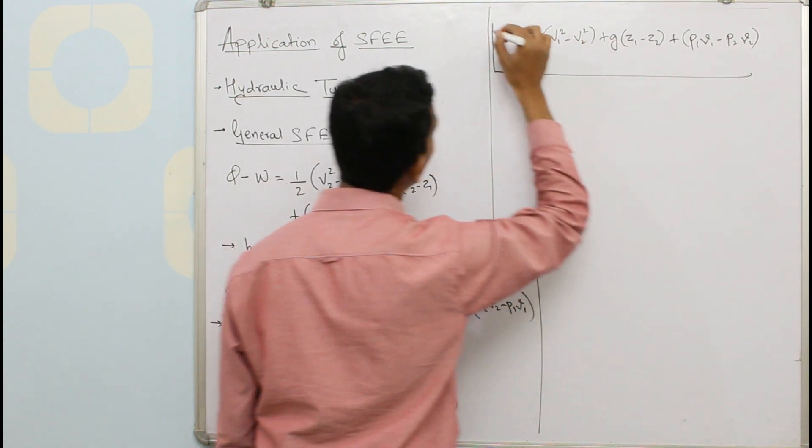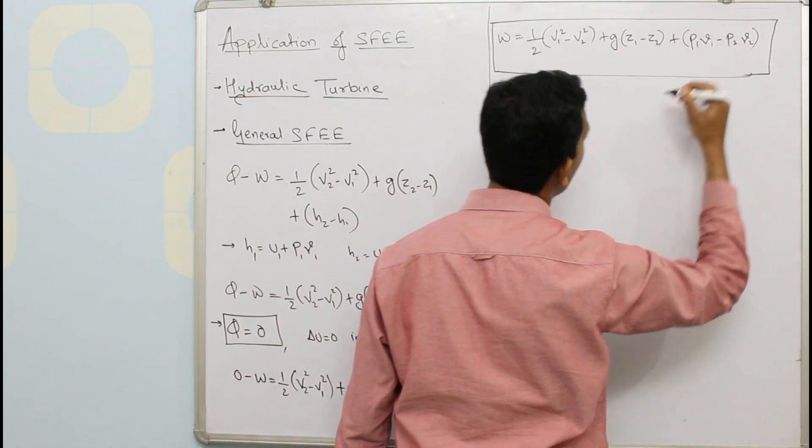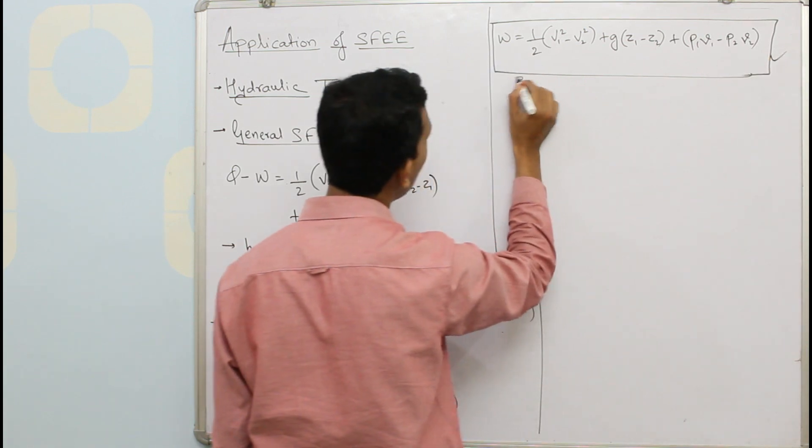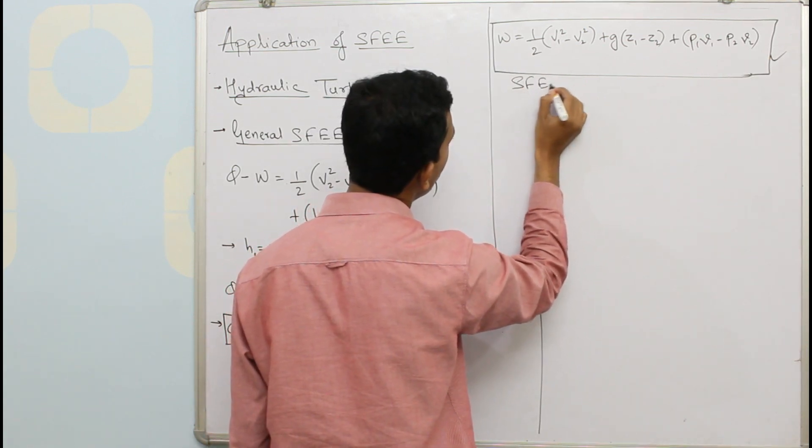And this is the equation for work done by a hydraulic turbine and this is the steady flow energy equation for hydraulic turbine.